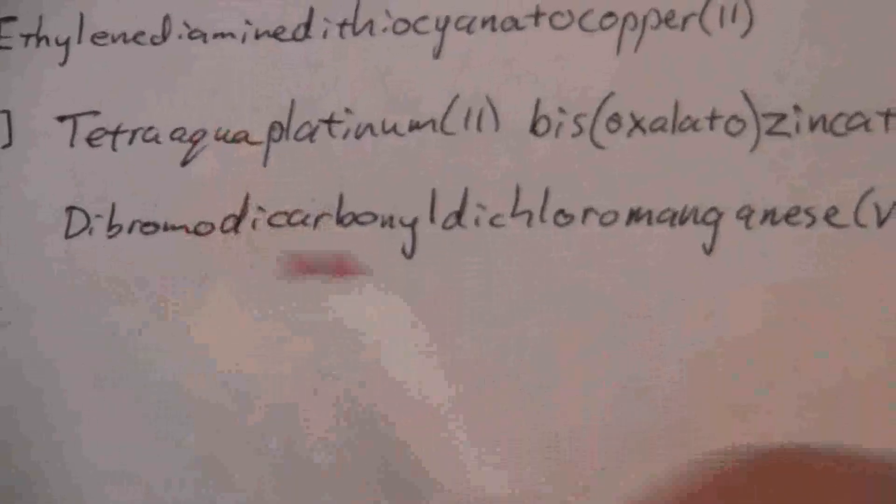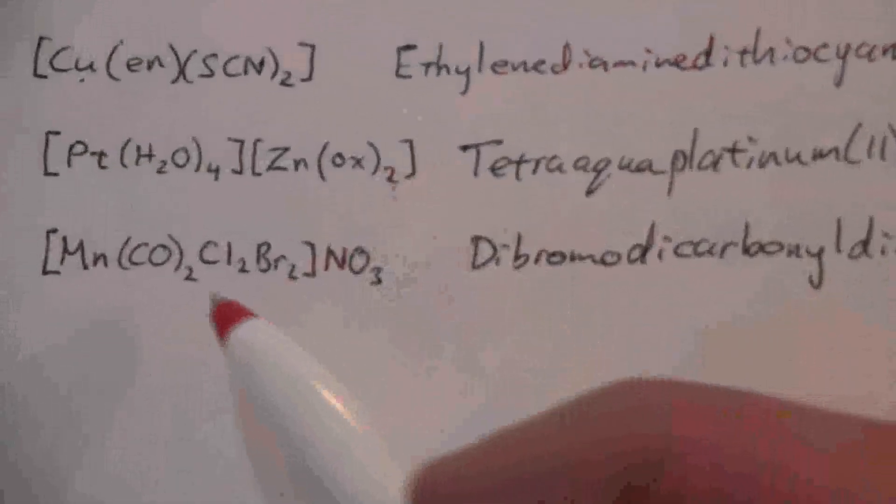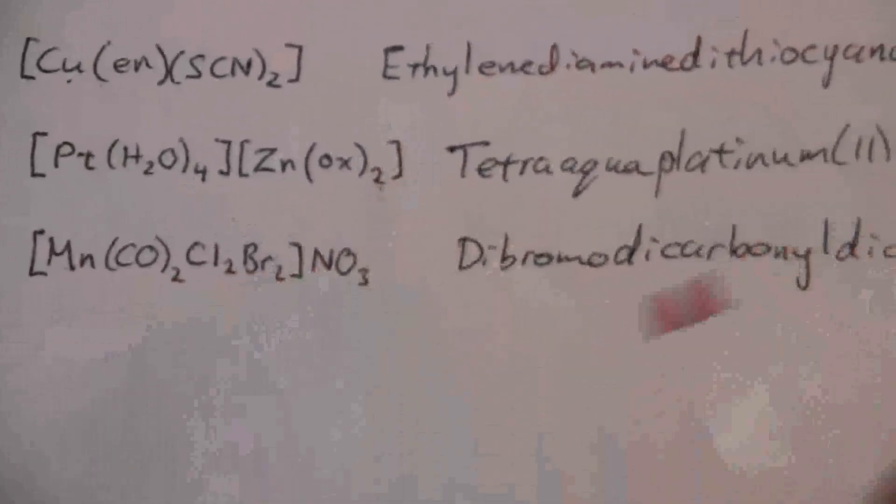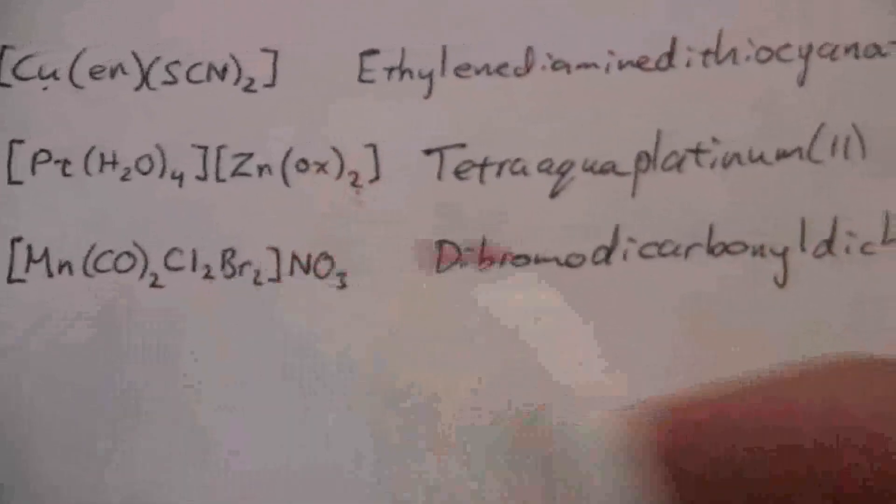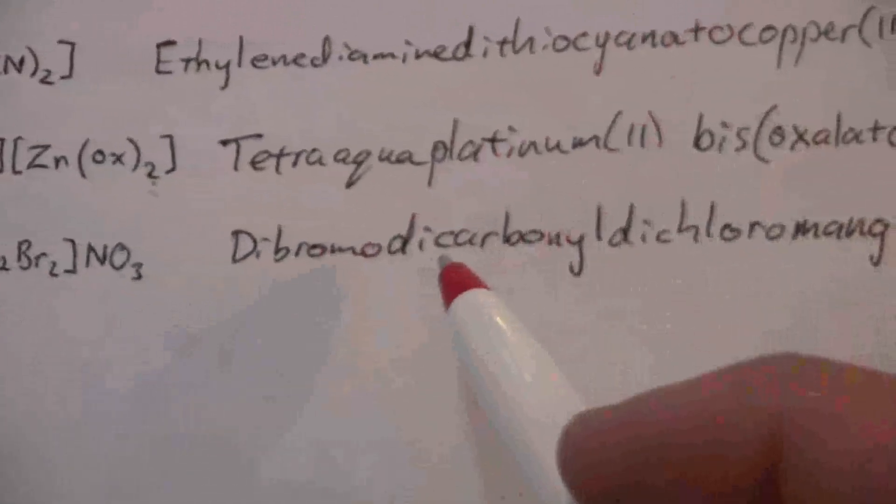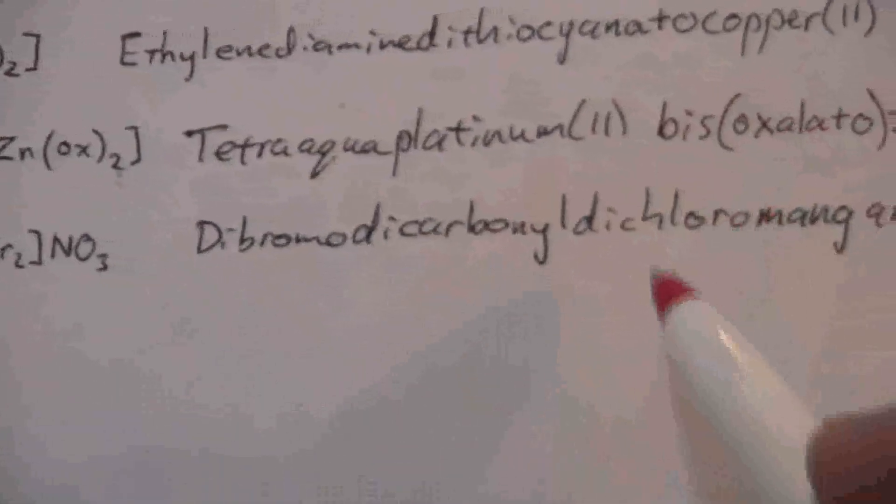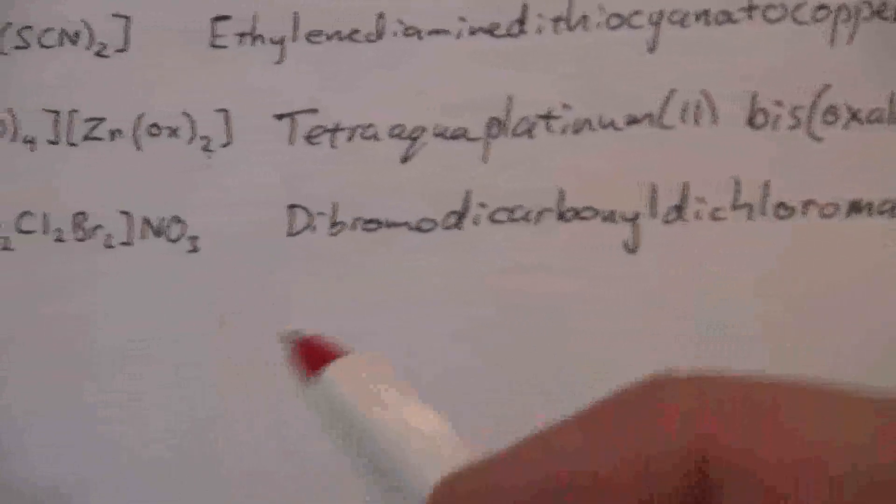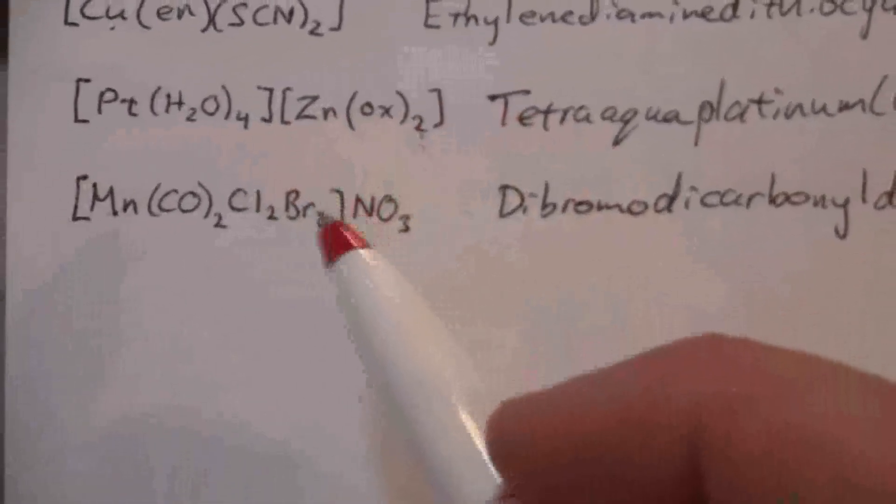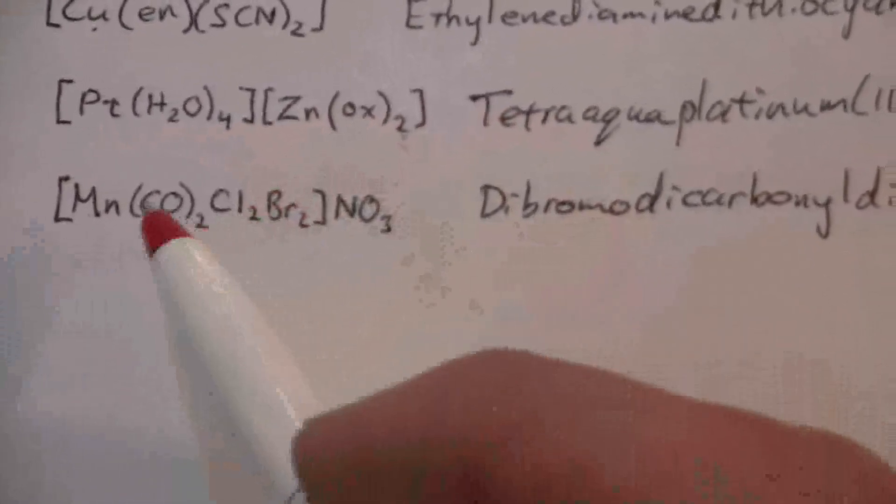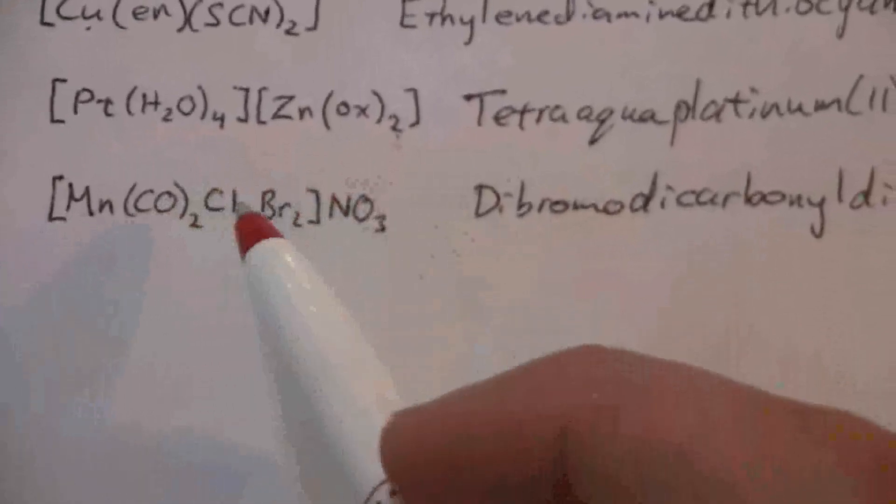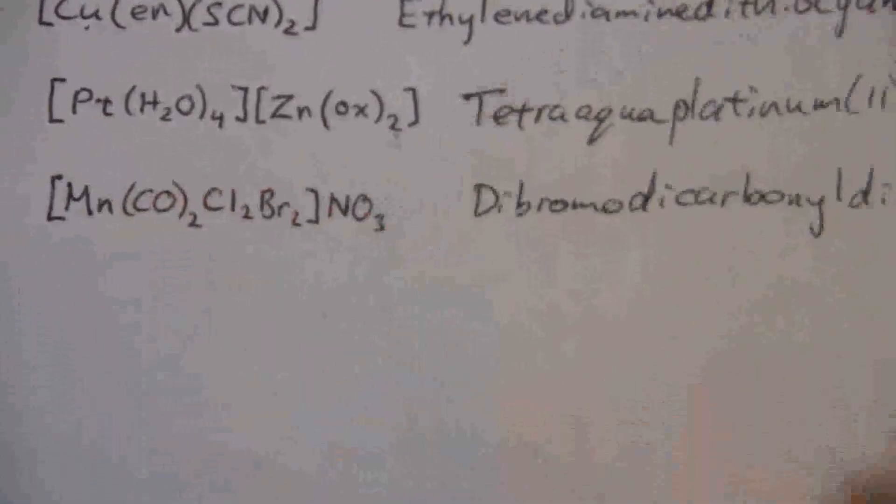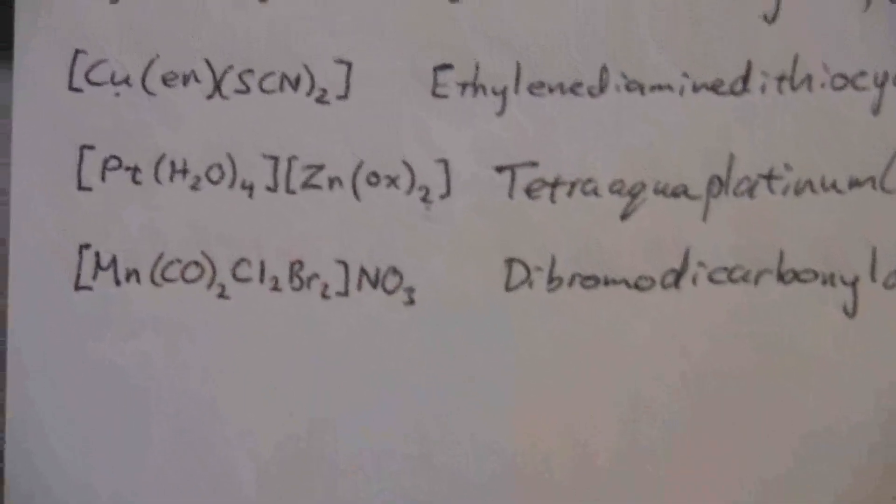Okay. So here we have quite a few ligands. We name them in alphabetical order. So bromo comes first, then carbonyl with the A, and then chloro with the H. Okay. So dibromo, dicarbonyl, dichloro, manganese five, nitrate. All right.